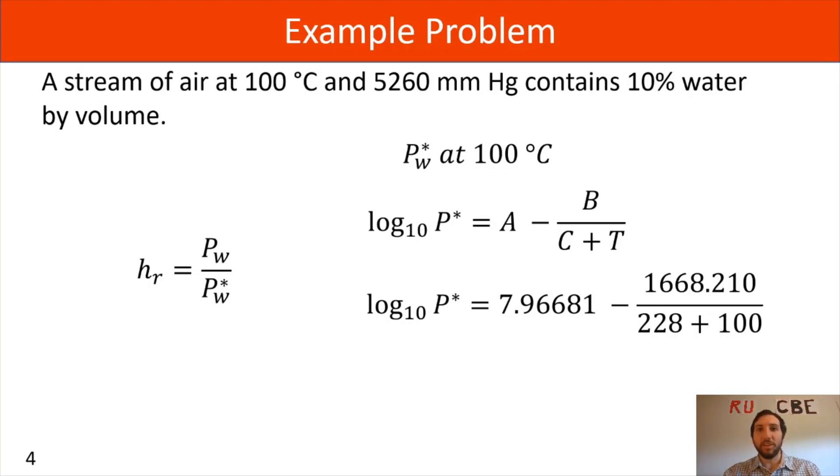This is one where the coefficients work when you have degrees Celsius and your P star will be in millimeters of mercury. After doing your calculations for the right hand side, you'll get that log base 10 P star equals 2.88. If you exponentiate, you'll see that P star is equal to 760 millimeters of mercury. We've now solved for Pw star.